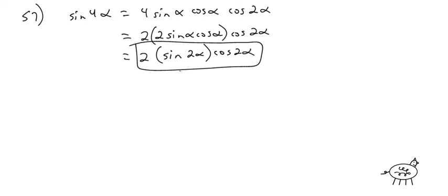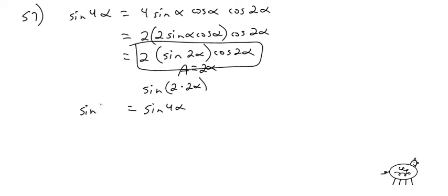Remember the double angle formula: 2 sine of a cosine of a equals sine of 2a. Here a equals 2 alpha, so it's sine of 2 times 2 alpha, which is sine of 4 alpha. So sine of 4 alpha equals sine of 4 alpha.